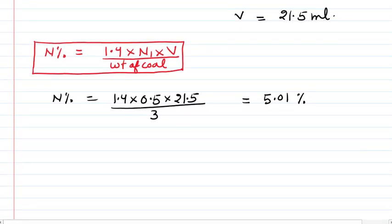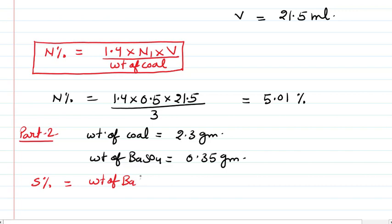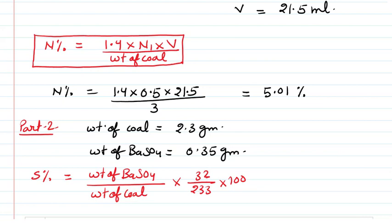For the solution of Part 2, let us mention the given values. Weight of coal = 2.3 grams, and weight of barium sulfate = 0.35 grams. Now we directly apply the formula for sulfur percentage: % S = (weight of BaSO₄ / weight of coal) × (32 / 233) × 100.